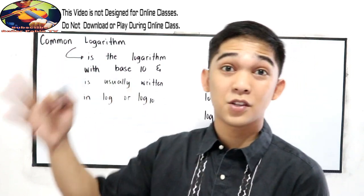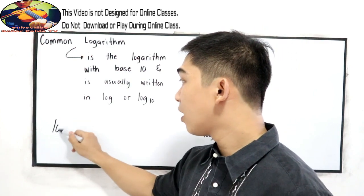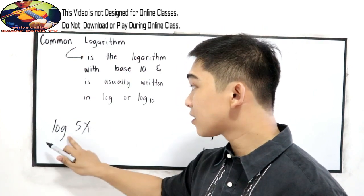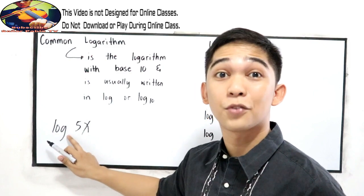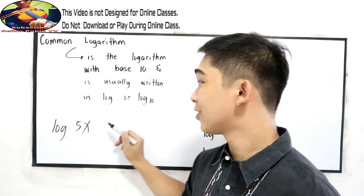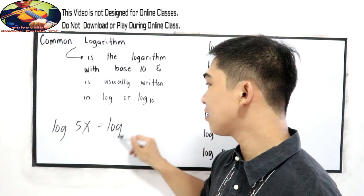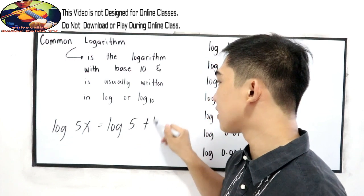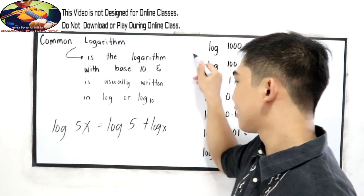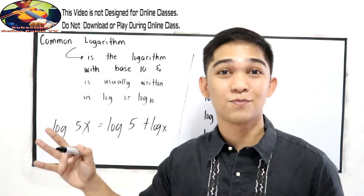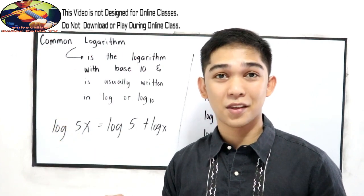If you notice in our previous lesson, if we have log 5x, this is understood with base of 10. So that is equal to log 5 plus log x. That is our previous lesson, the laws of logarithm.